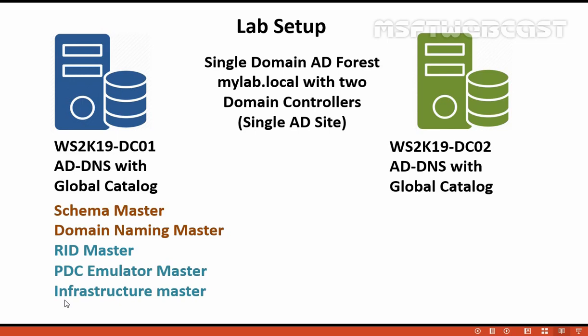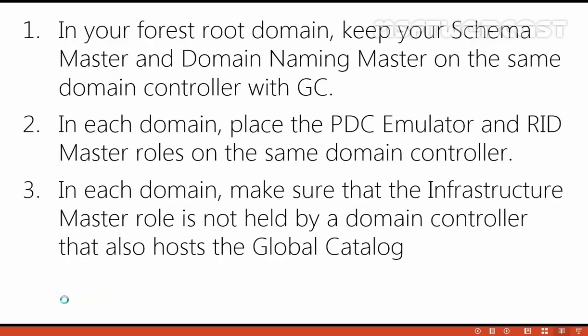There are three simple best-practice rules for FSMO role placement. Rule one: in your forest root domain, keep the Schema Master and Domain Naming Master on the same domain controller, and make sure that domain controller also hosts a global catalog. Rule two: in each domain, place the PDC Emulator and RID Master roles on the same domain controller, ensuring the hardware can handle the load. Rule three: in each domain, make sure the Infrastructure Master role is not held by a domain controller that also hosts the global catalog, and ensure the Infrastructure Master is a direct replication partner of a global catalog server in the same site.